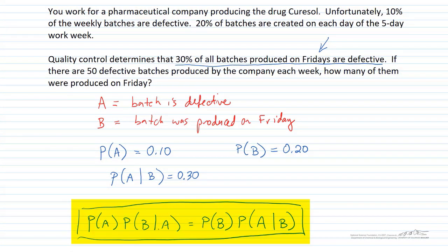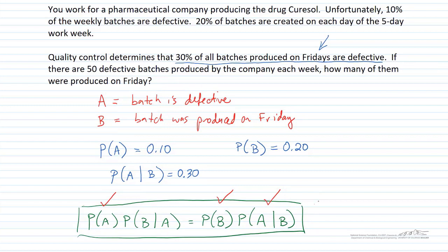The multiplication rule is shown here. Let's put a check mark next to everything we know: we know P(A), we know P(B), and we know P(A|B). This is just a matter of rearranging and solving for the unknown, which is P(B|A) — given that a batch is defective, what's the probability it was produced on Friday? Knowing that, we multiply by the 50 defective batches to get the number produced on Friday.